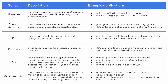A pressure sensor is a transducer that generates different electric currents depending on the pressure applied. It might be used for weighing lorries at a weighing station, or measuring the gas pressure in a nuclear reactor. We also have sound and acoustic sensors — these are basically microphones that convert detected sound into electric signals or pulses. They can pick up the noise of footsteps in a security system, or detect the sound of liquids dripping at a faulty pipe joint.